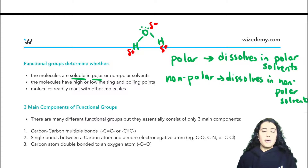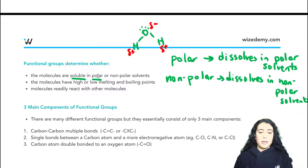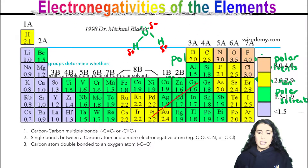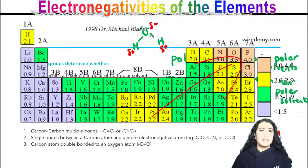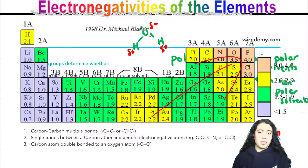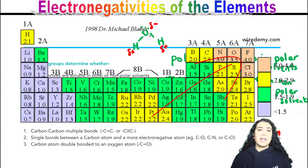We know that the oxygen is electronegative because if you look at a periodic table, electronegativity increases as you go up and to the right. Fluorine, as a reference point, is the most electronegative atom. Oxygen is also quite electronegative because it's in the top right of the periodic table — that rule doesn't apply to noble gases, but otherwise nitrogen is another very electronegative element.